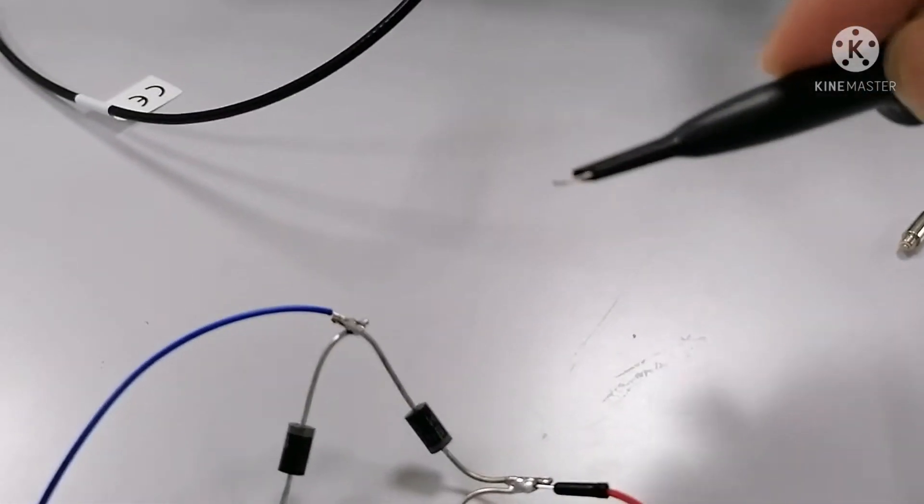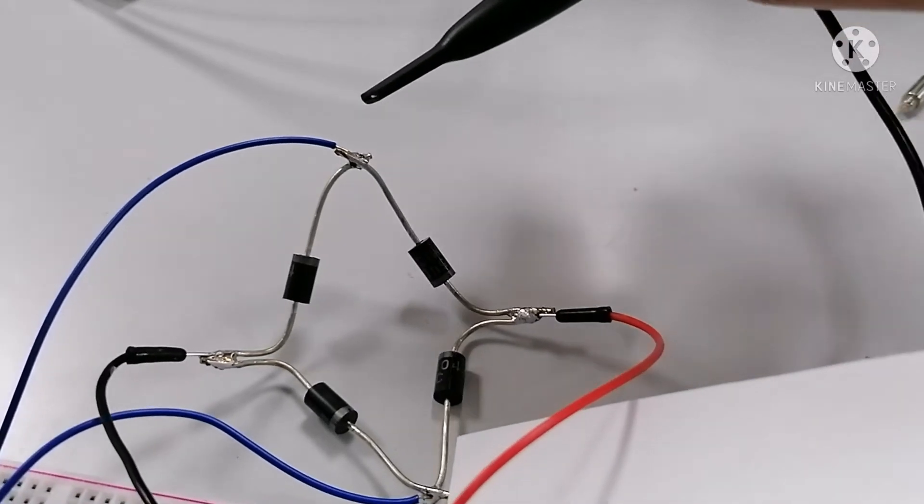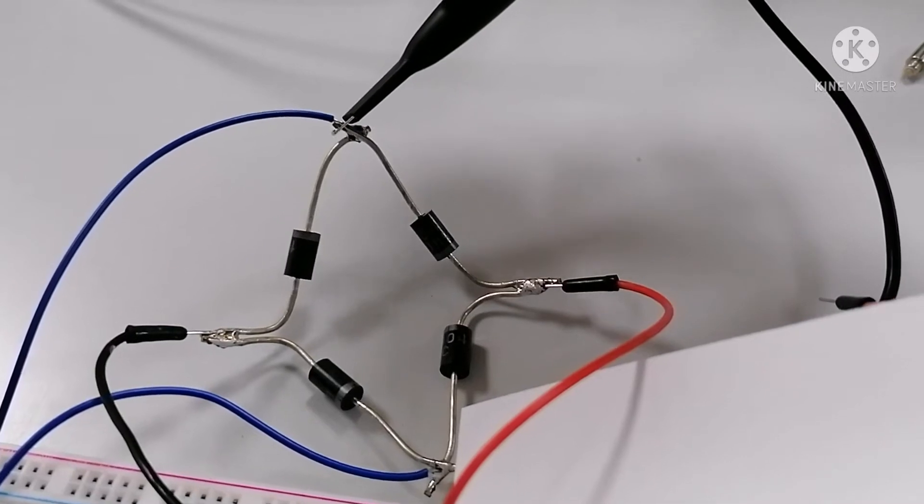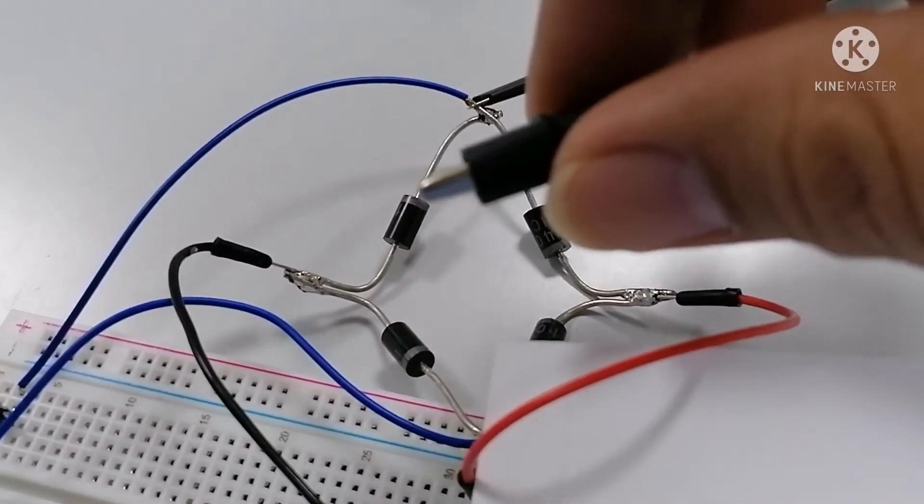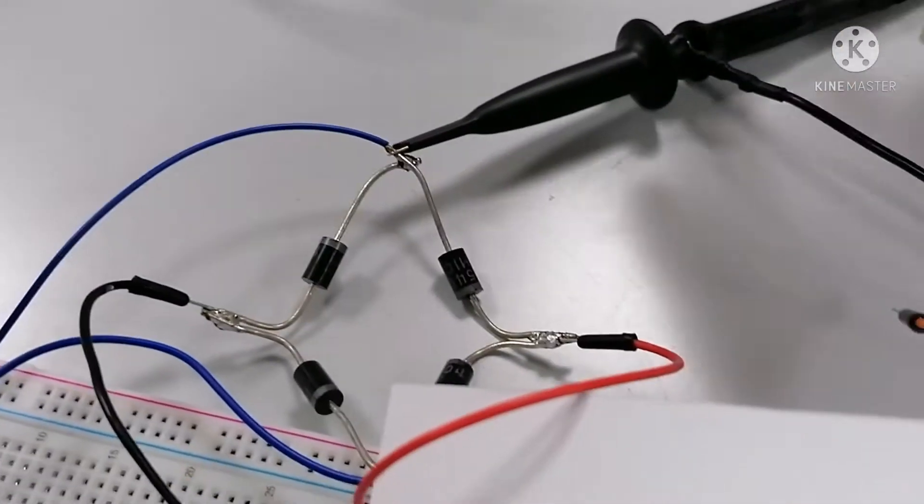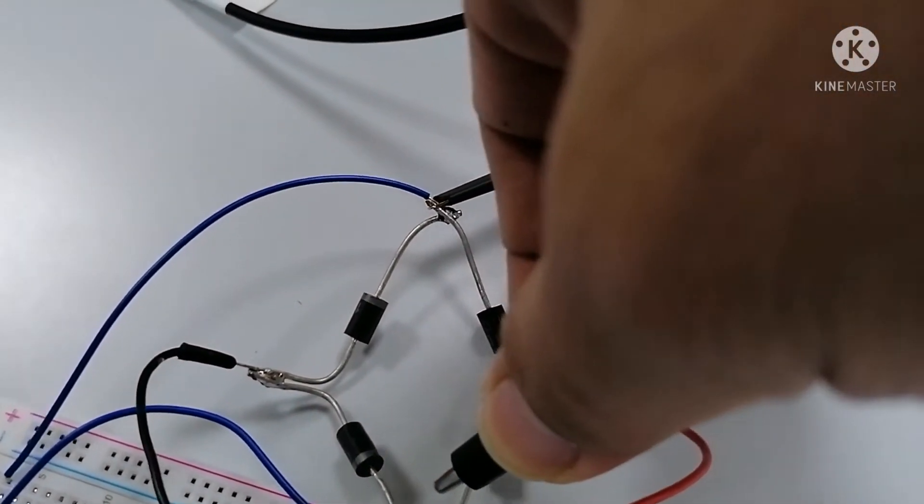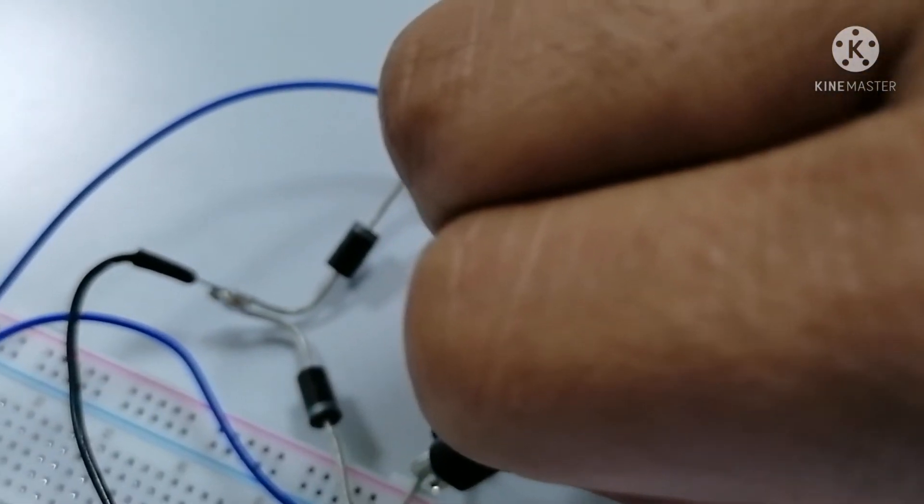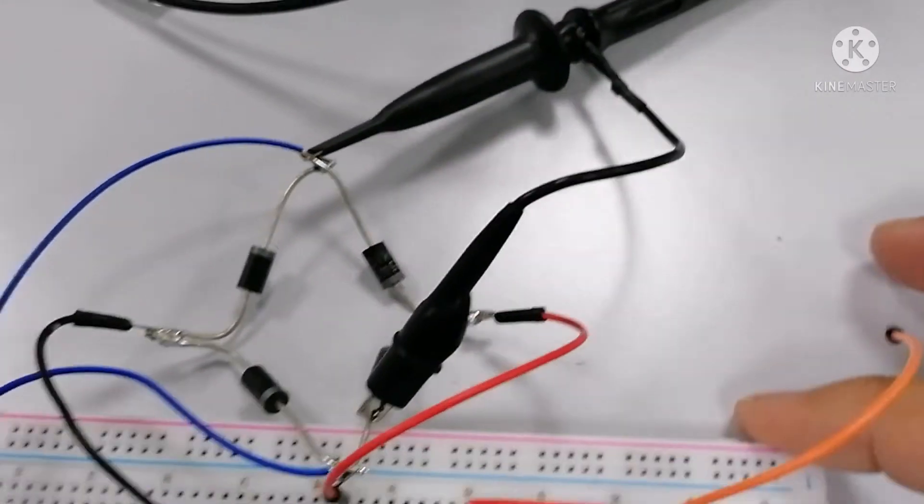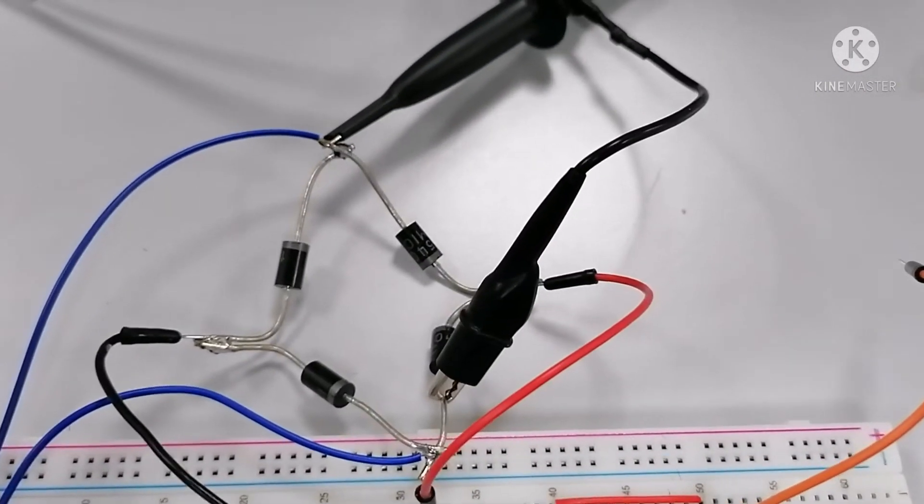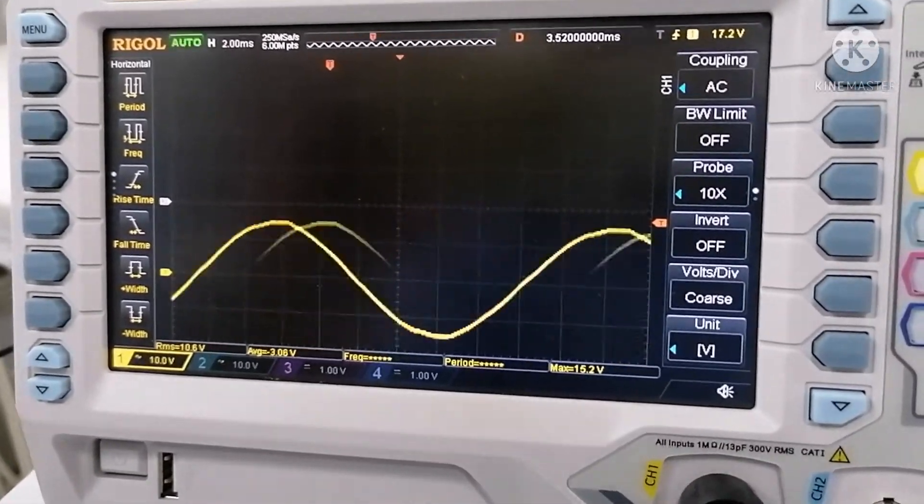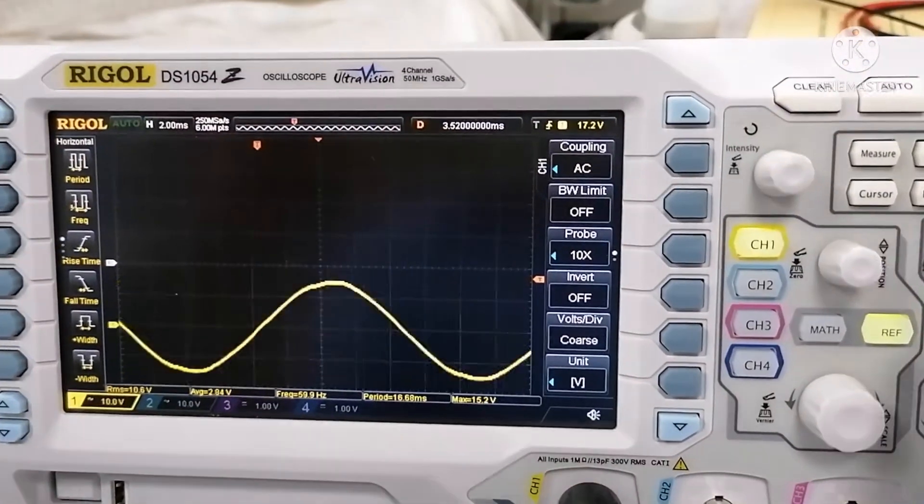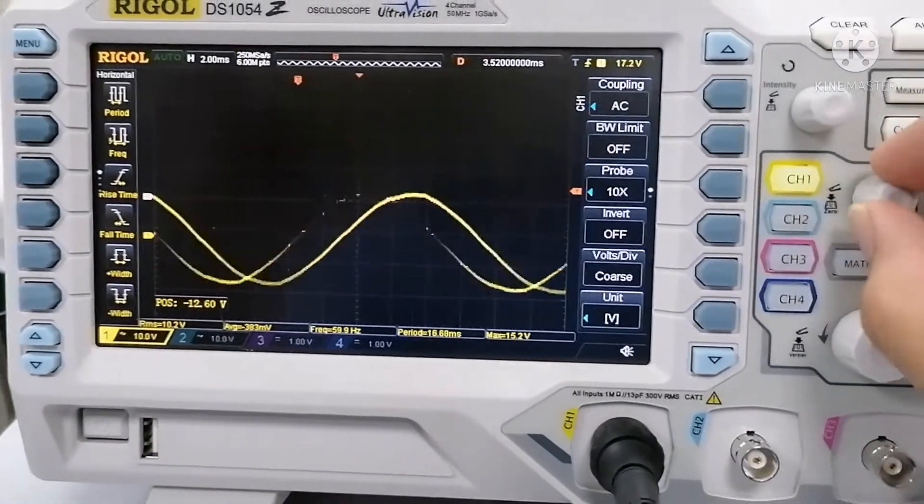The first thing is I will connect this probe to here. This is the AC input and the other one is to connect to the other point. Okay this is now the connection. And you can see in the oscilloscope that is a sinusoidal wave. I will reach it to the middle and you can see clearly.